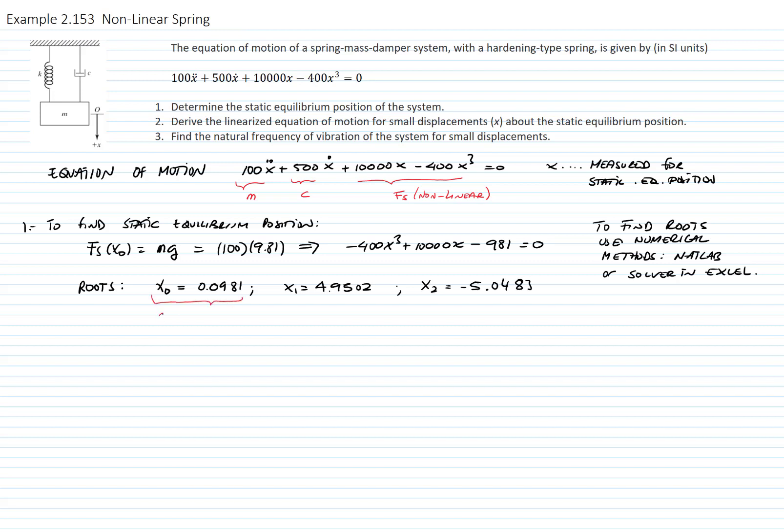To find our linearized force of the spring, we will derive an expression for the force of the spring with respect to x, and we will evaluate that derivative about our equilibrium position. The derivative equals negative 400 times 3x squared plus 10,000, evaluated at x0, which is 0.0981. That equals the linear constant of the spring, which is negative 400 times 3 times 0.0981 squared plus 10,000, and that gives me a value of 9988.44 newtons per meter.